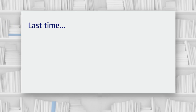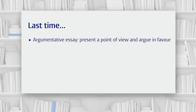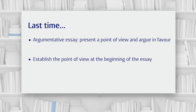Hello. Last time we introduced the argumentative essay. The aim of the argumentative essay is to present a point of view and then present arguments in favour of that point of view. We also said that in this type of essay, you establish the point of view that you want to argue near the start of the essay. The point of view that you argue for is called your thesis — the central controlling idea of your essay. When we state the point of view that we're going to argue, it's called a thesis statement.